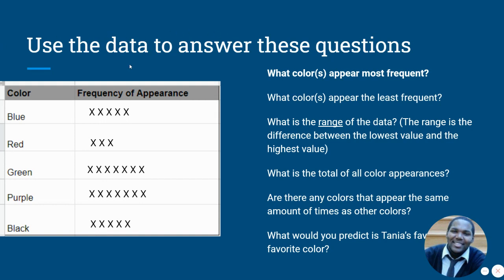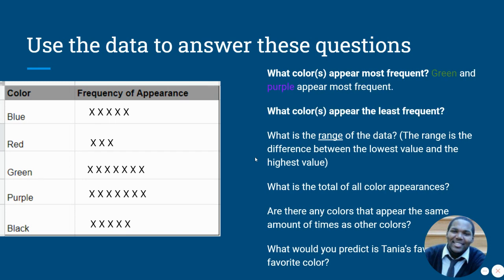Use the data to answer these questions. We've gathered the data so far. And what we want to do is we want to use this data to get information about what we saw. So what colors appear most frequently? That's right. Green and purple appear most frequently. And we see that here. So green shows up seven times and purple shows up seven times.